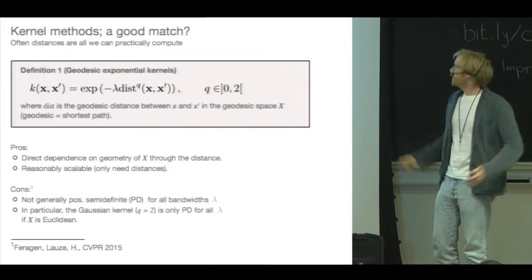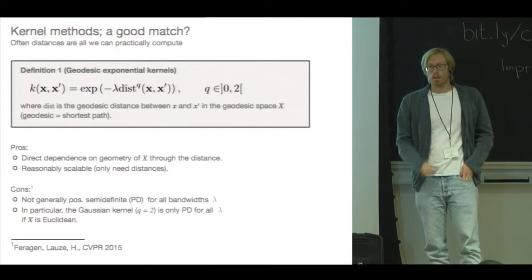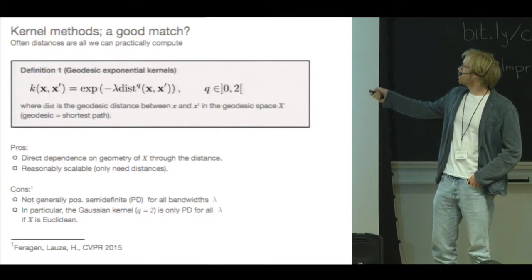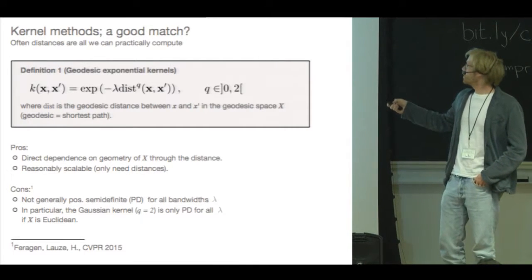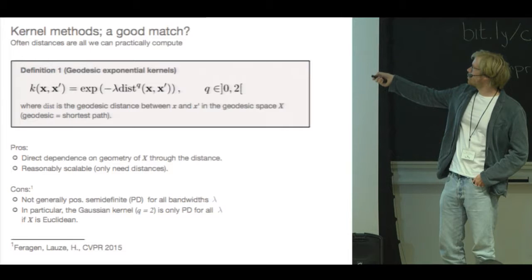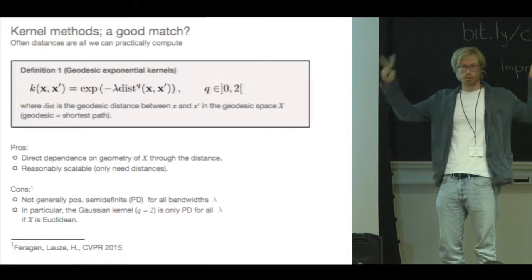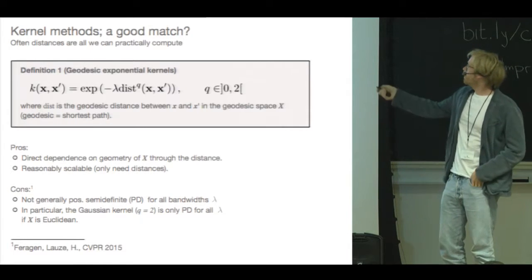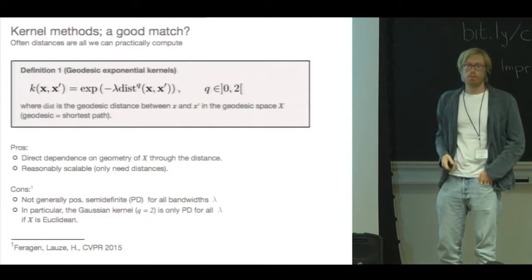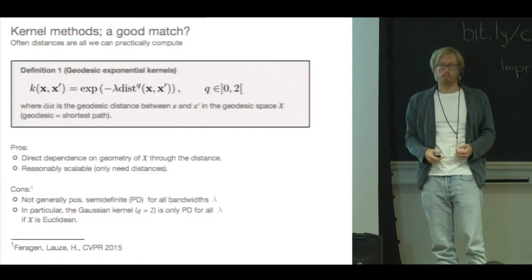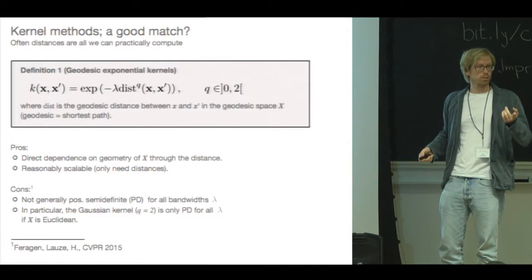Okay, this is great, right? Except it doesn't work. So you can generally show that this is not a positive definite kernel. So in particular, if you pick q to be 2, so you get sort of a Gaussian kernel, then this is only a positive definite kernel for all values of lambda if your data space is Euclidean.